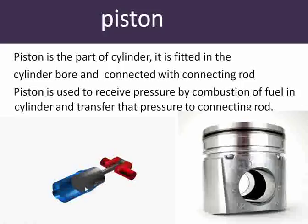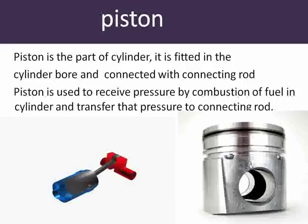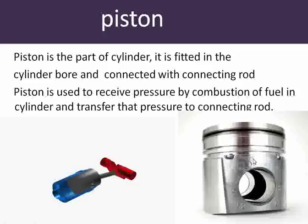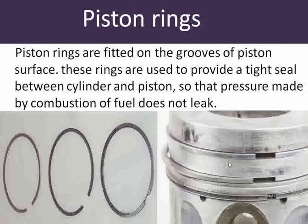The piston reciprocates in the cylinder and is connected with the connecting rod. Our next part is piston rings. These rings are fitted on the grooves of the piston surface, and these rings are used to provide a tight seal between the cylinder and piston. Here you can see the piston and the grooves that are used for fitting of the piston rings.